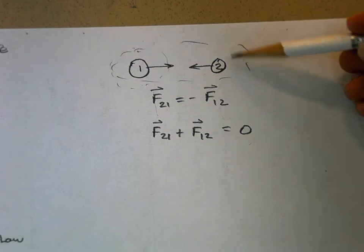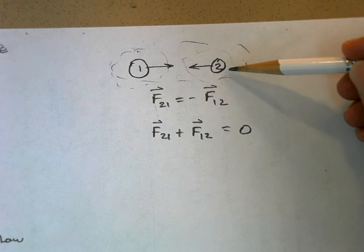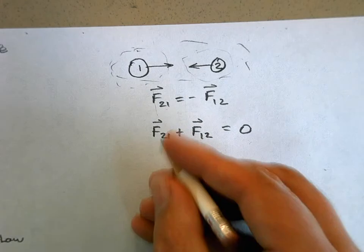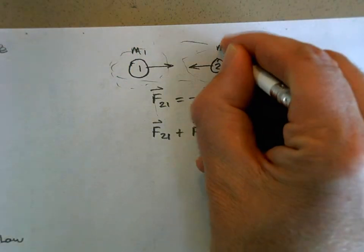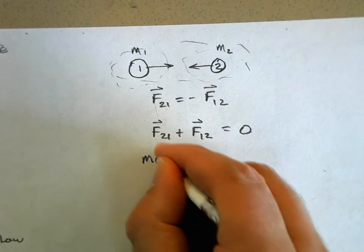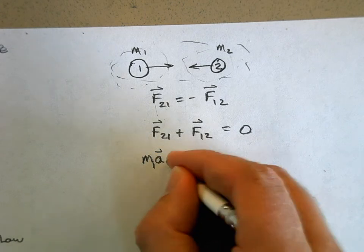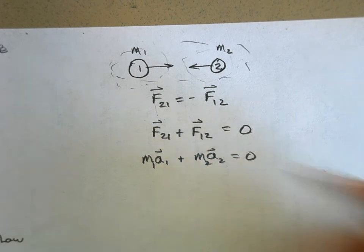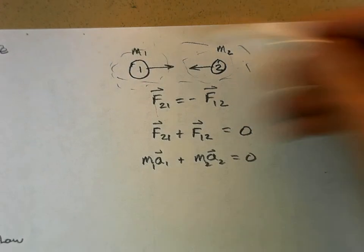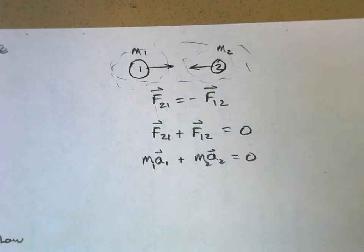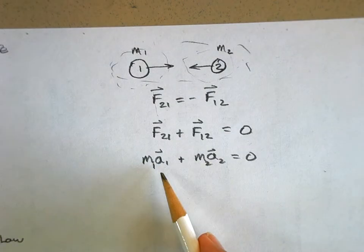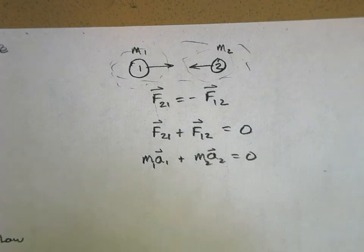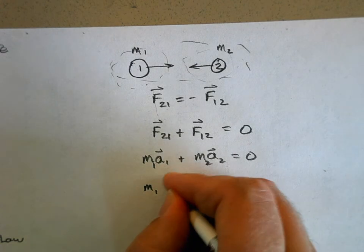If you treat each object individually, the net force on object one is m₁a₁ and the net force on object two is m₂a₂. So m₁a₁ plus m₂a₂ equals zero. Now we're going to relate acceleration to velocity - acceleration is the rate at which velocity changes. So this is m₁ times dv₁/dt plus m₂ times dv₂/dt.